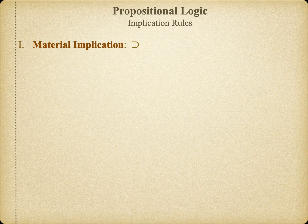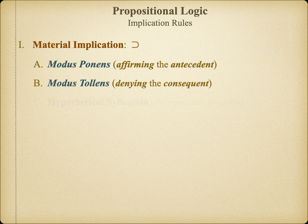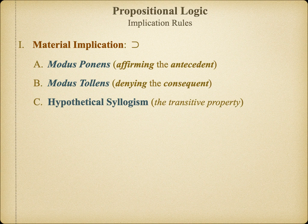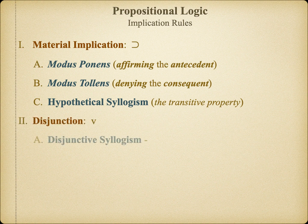We'll begin with four simple argument forms which we discovered in the last unit. Three of our arguments, which we are going to call rules of inference, are based on material implication. In modus ponens, we affirm the antecedent of a hypothetical claim to derive the consequent. In modus tollens, we deny the consequent to derive a denial of the antecedent. In hypothetical syllogism, we combine two hypothetical claims to derive a third. The fourth argument form is a disjunctive syllogism, which allows us to derive a disjunctive alternative with necessity.